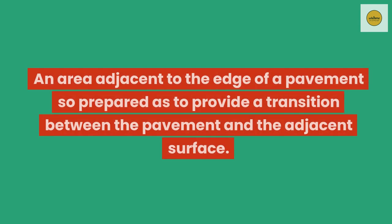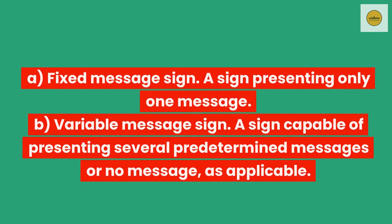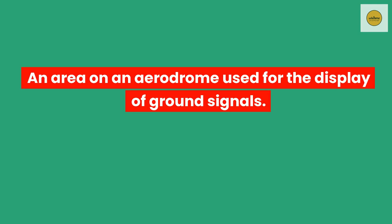Shoulder. An area adjacent to the edge of a pavement so prepared as to provide a transition between the pavement and the adjacent surface. Sign. (A) Fixed message sign: a sign presenting only one message. (B) Variable message sign: a sign capable of presenting several predetermined messages or no message, as applicable. Signal area. An area on an aerodrome used for the display of ground signals.